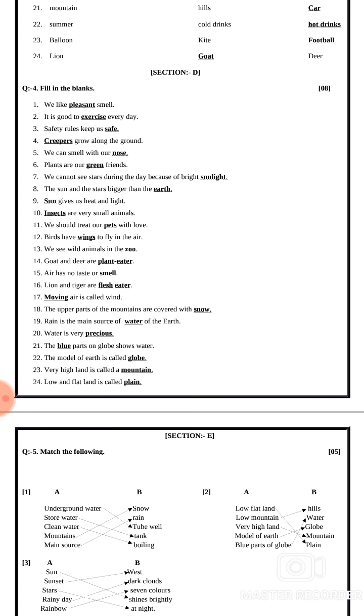Third number: safety rules keep us safe. Answer is safe. Fourth number: creepers grow along the ground. Answer is creepers. Fifth number: we can smell with our nose. Answer is nose. Sixth number: plants are our green friends. Answer is green.